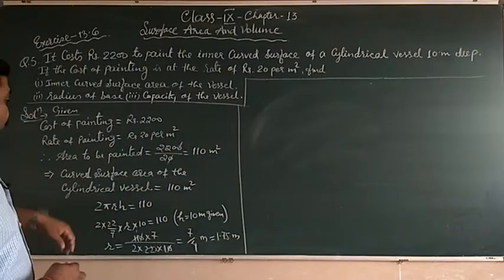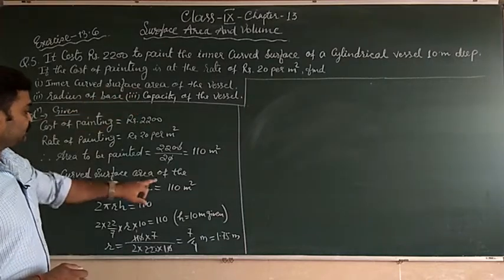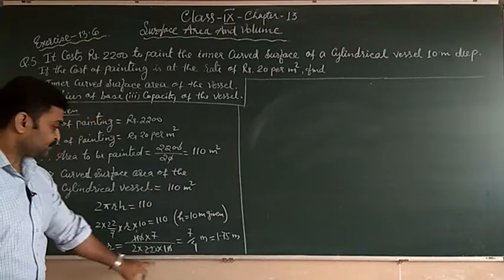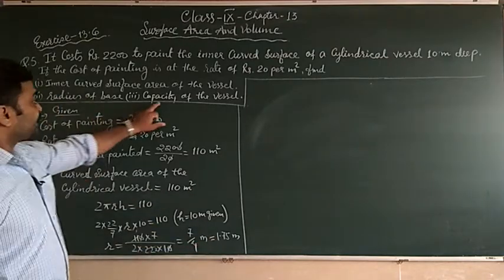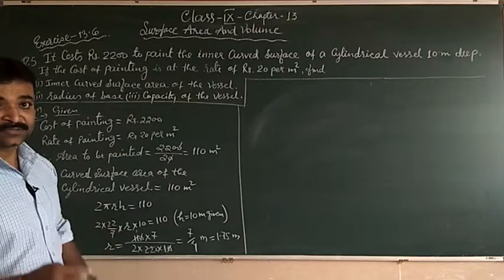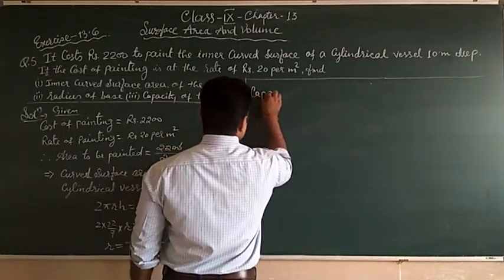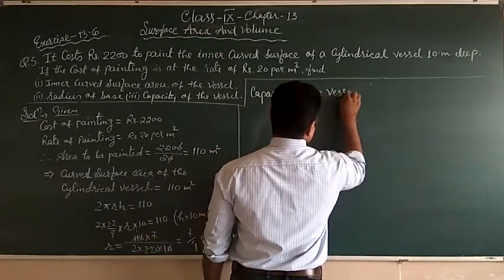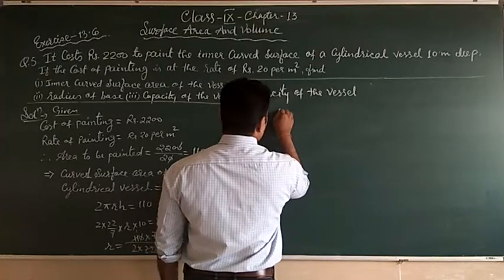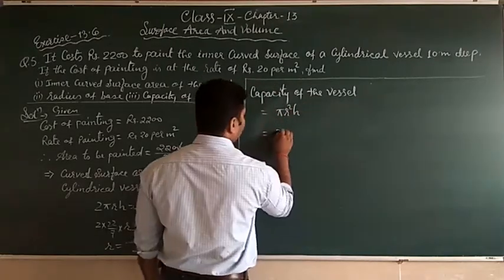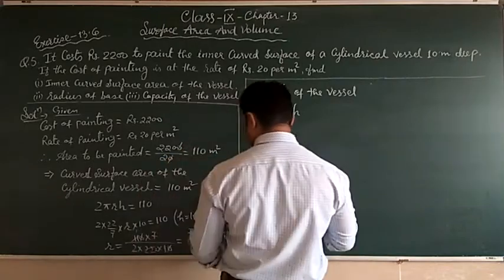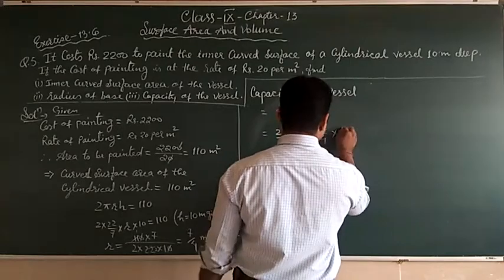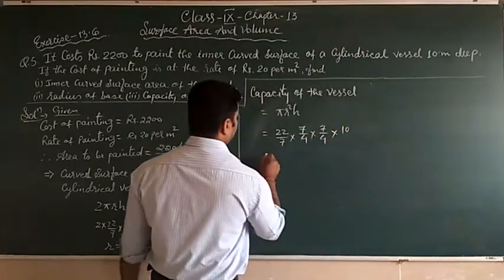Now, inner curved surface area was 110 meter square. Second, radius of base is 1.75 meters. Now capacity of the vessel, capacity means volume. So capacity of the vessel is equal to πr²h. That is 22 upon 7 into 7 upon 4 into 7 upon 4 into 10.